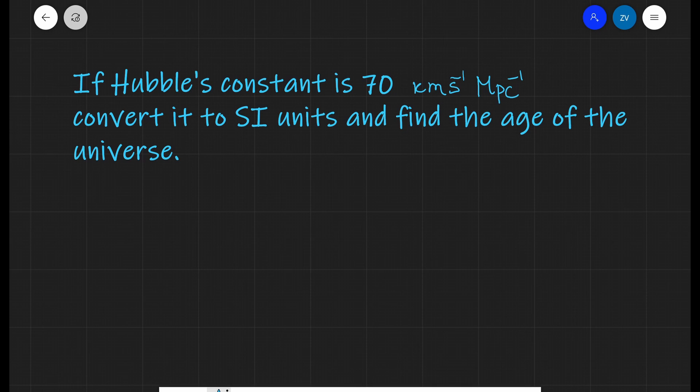The first thing I'm going to do is just write down the value of Hubble's constant in kilometers per second per megaparsec like so.